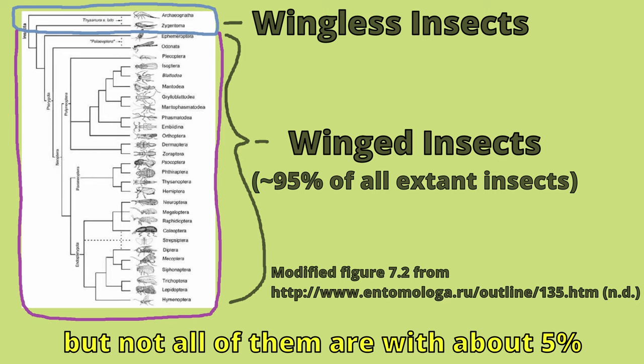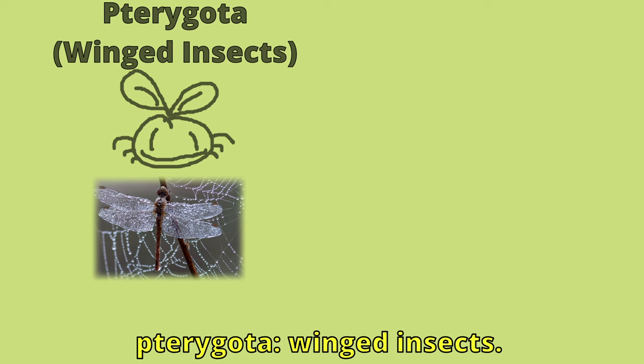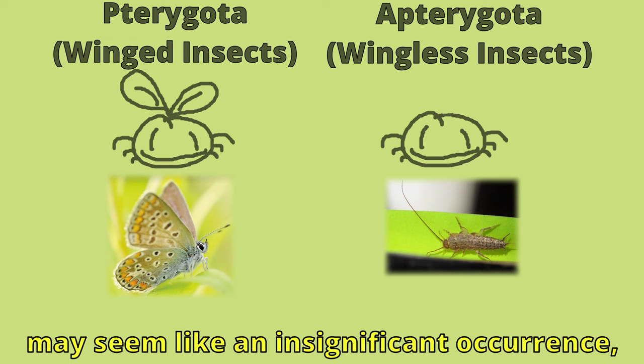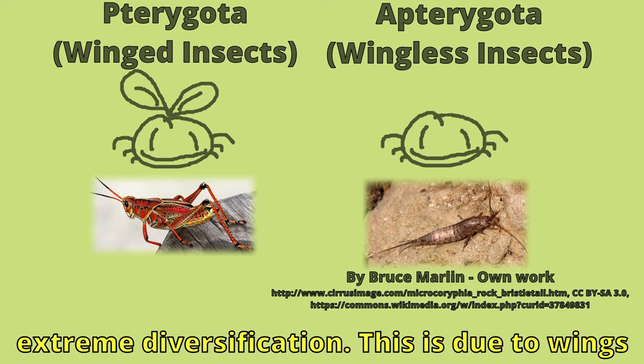The vast majority of insect species are winged, but not all of them are, with about 5% of insects being wingless. The class Insecta splits to form two clades relevant to this presentation: Pterygota, winged insects, and Apterygota, wingless insects. While the development of a single trait may seem like an insignificant occurrence,